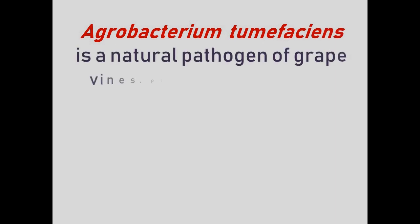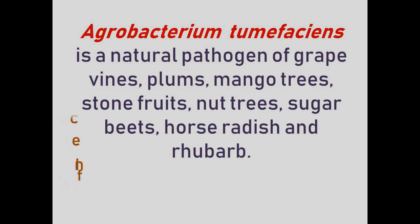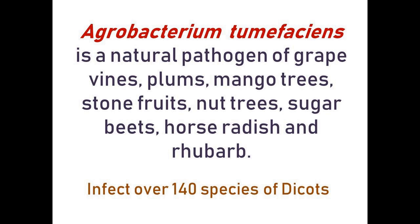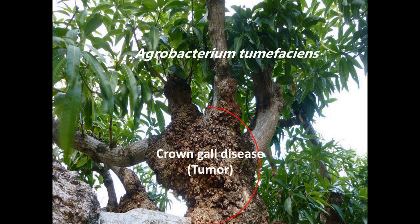Agrobacterium tumefaciens is a serious pathogen of grapevines, plum shrubs, mango trees, stone fruits, nut trees, sugar beets, horseradish, and rhubarb. It causes tumor induction in over 140 species of dicot plants. The tumor is called crown gall. Scientists have also engineered it to infect monocots. Whereas rhizogenes induces hairy roots in the infected plants.